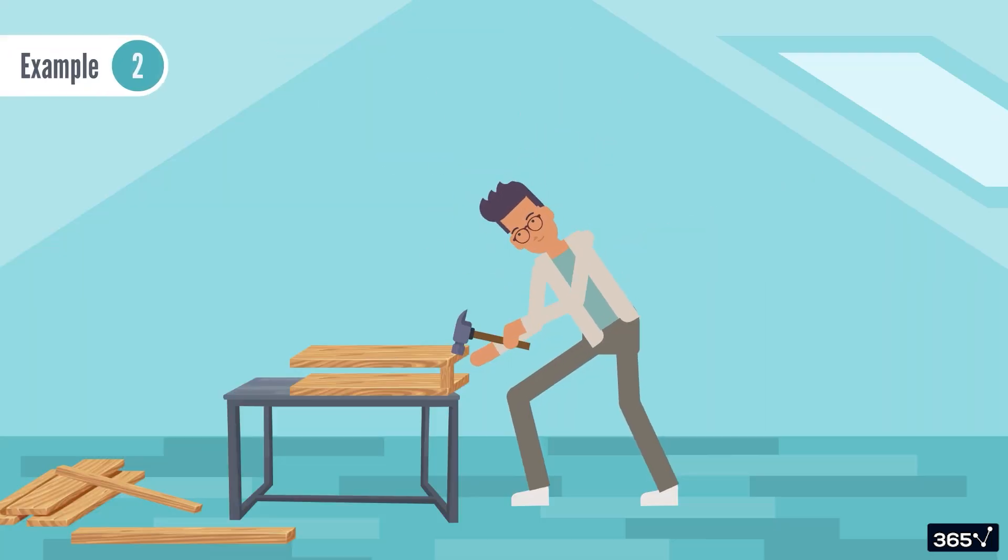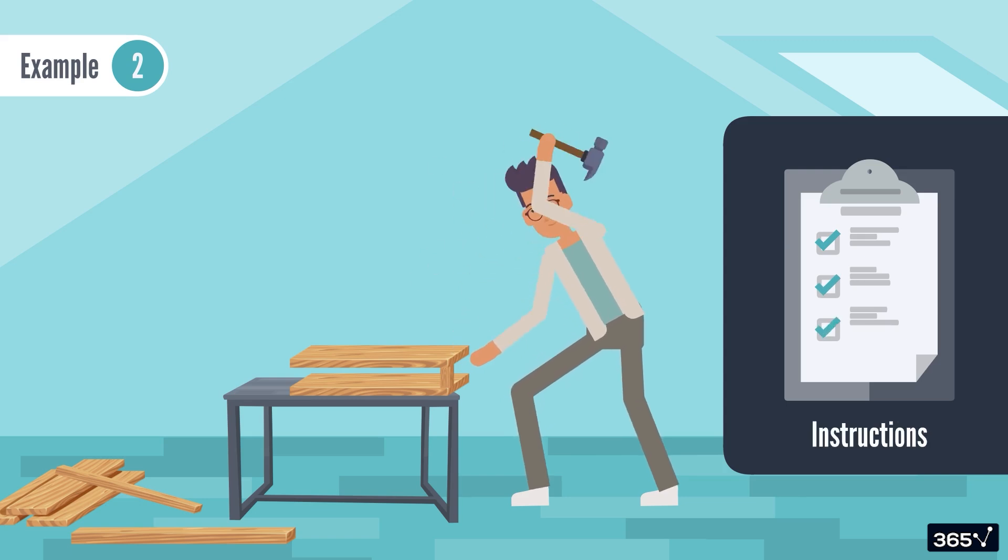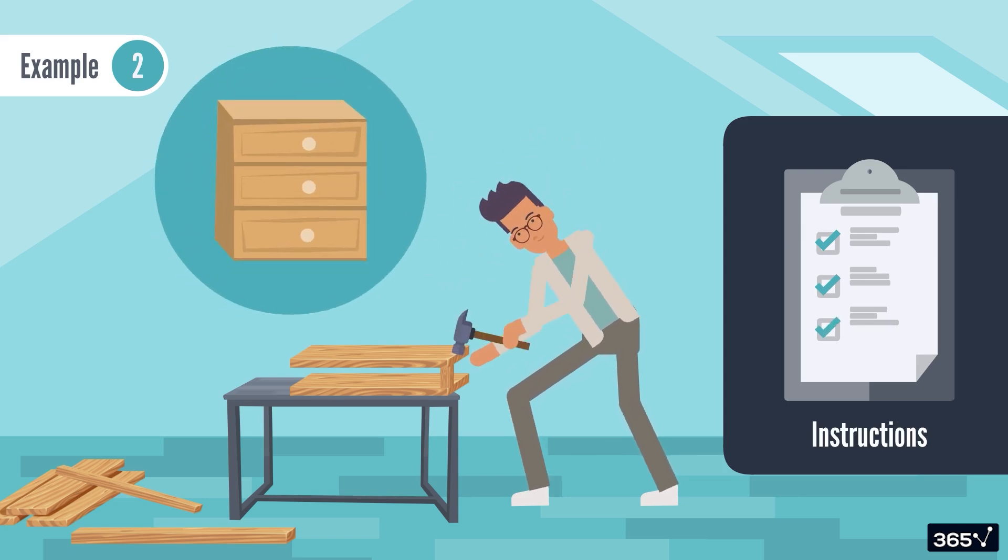Example two: When assembling furniture, you follow a manual with step-by-step instructions to convert individual parts into a finished product.